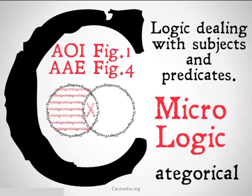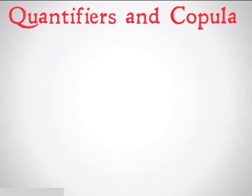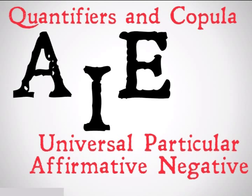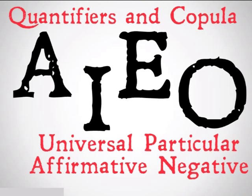You will understand those diagrams oh so soon. First, we're going to be doing some vocabulary — we're going to talk about what quantifiers and copula are, then universal, particular, affirmative, and negative, and then we will get to the four major forms of categorical propositions: A, E, I, and O.